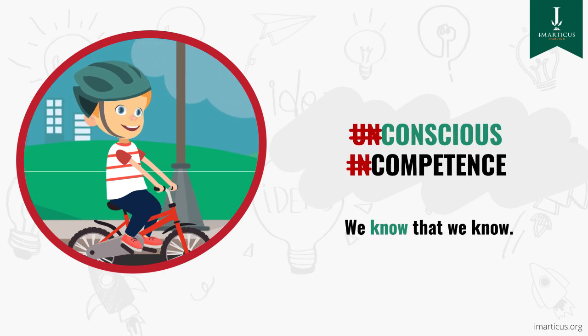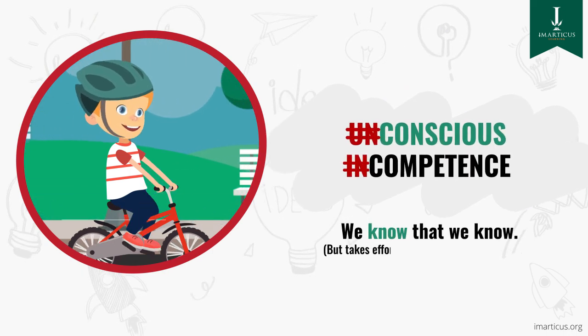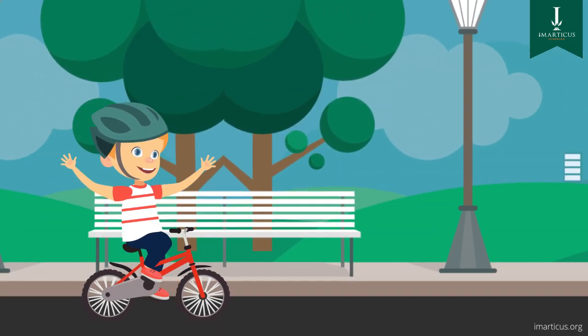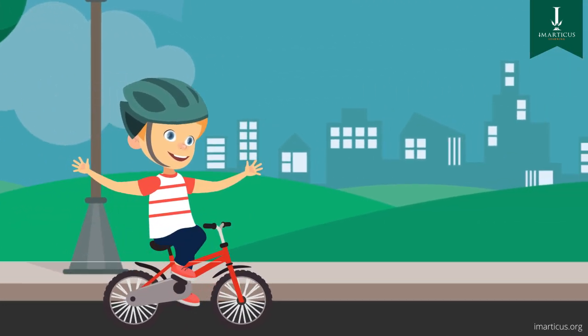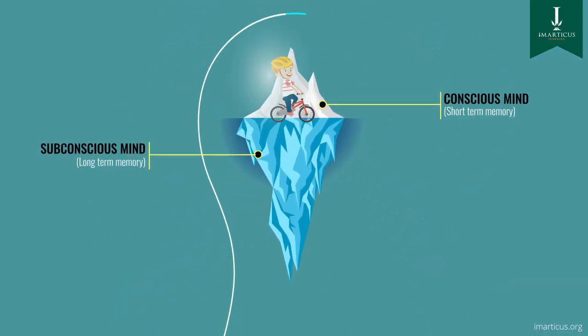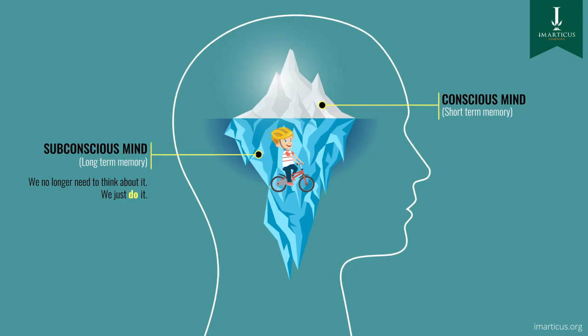conscious competence—when you know how to do something through conscious effort and concentration. We get so good at maintaining our balance and riding that we don't have to consciously think about it anymore. It becomes part of us. We then move to the fourth stage, which is unconscious competence.